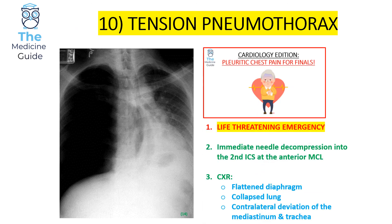This is an example of a tension pneumothorax, which is a life-threatening emergency. The key management point is that patients suspected of a tension pneumothorax must immediately undergo needle decompression — we insert a needle into the second intercostal space along the anterior mid-clavicular line, and you should hear a hissing sound representing escaping air. Once the patient is stable, investigations can then be performed.